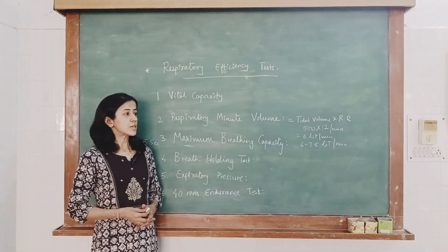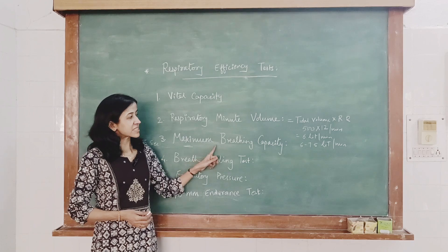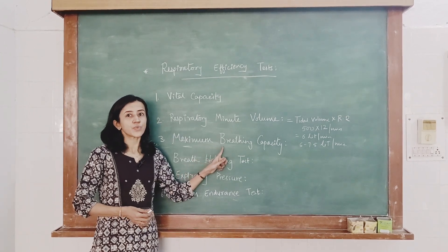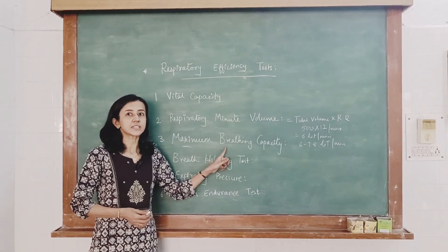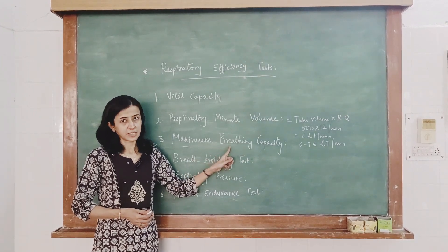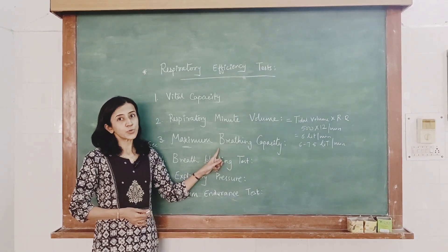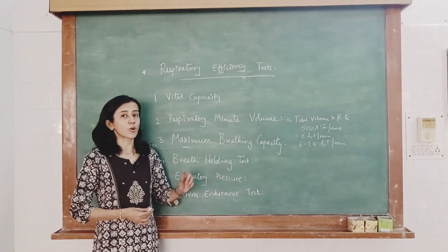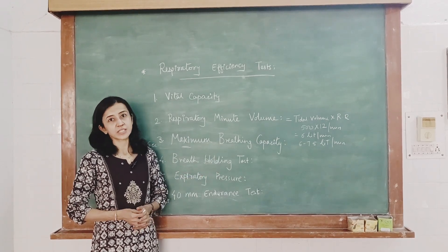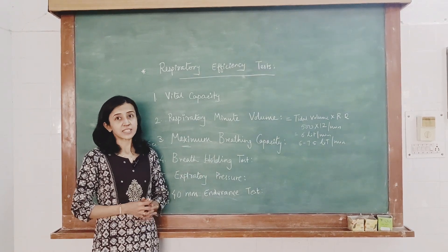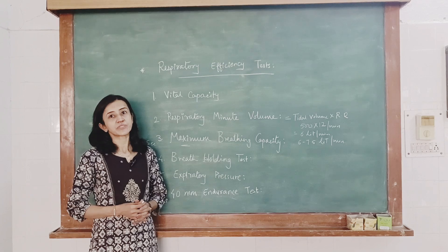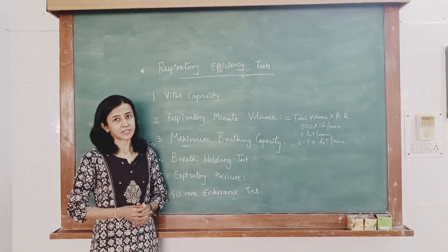The normal value for maximum breathing capacity is 70 to 120 litres per minute. It is reduced in conditions like emphysema, other obstructive diseases, as well as in patients having poor respiratory muscle strength.